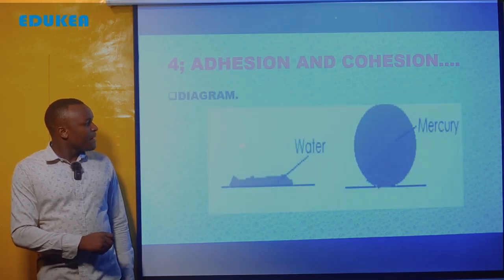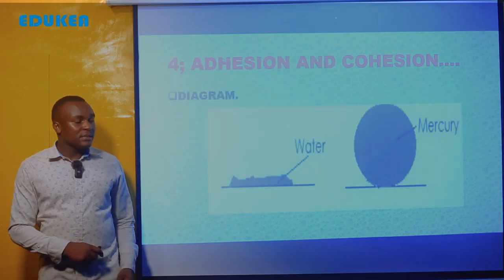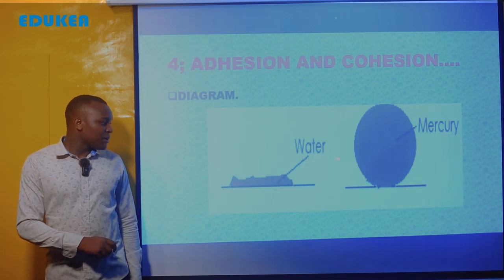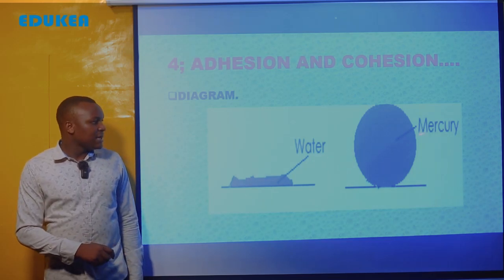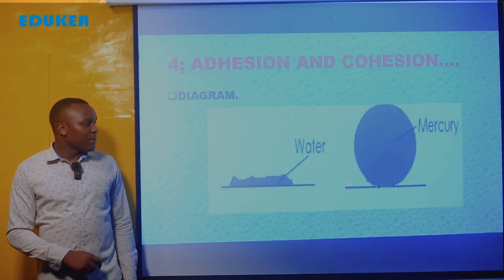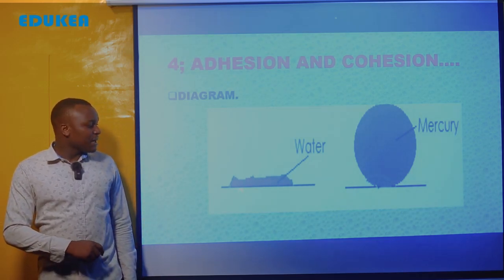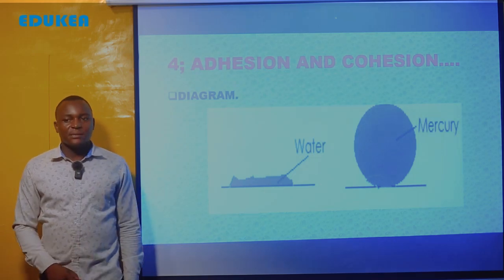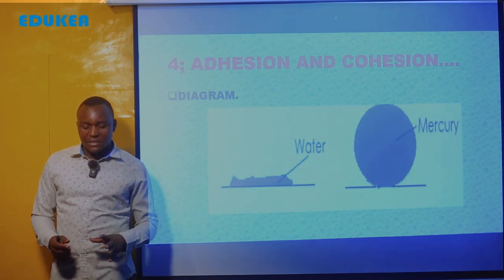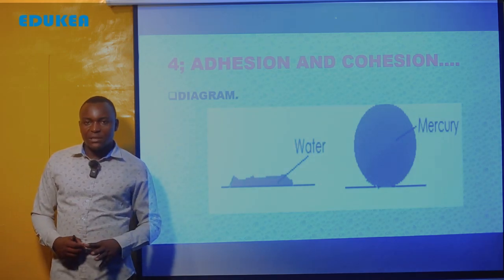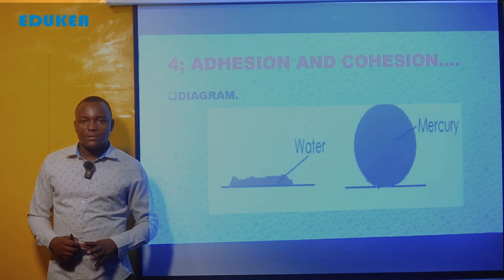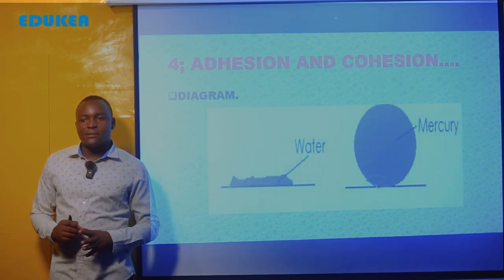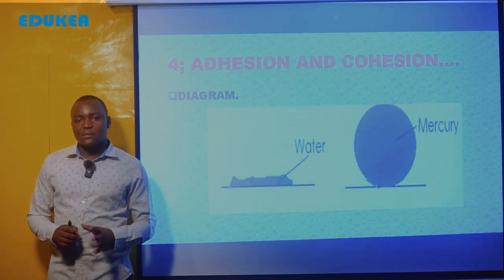As we can see on the diagram, here we have a water molecule and we have mercury. If you take a water molecule and place it on a surface, the water will spread above the surface.